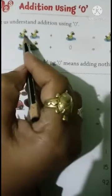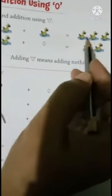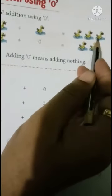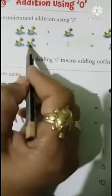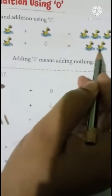See children, 2 plus 1 equals 3 ducks. Okay, next line, 2 plus 0 equals 2 ducks.